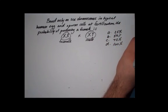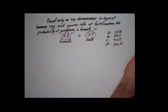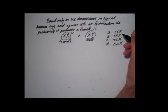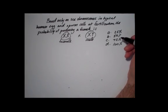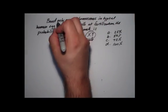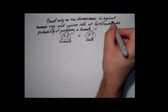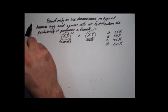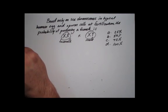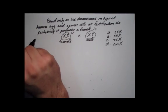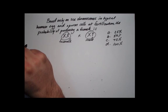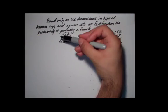Here's another question. This type of question is one that appeared on a CST exam, one of the California State exams. It says: based only on sex chromosomes in typical human egg and sperm cells at fertilization, the probability of producing a female is... So based on this,